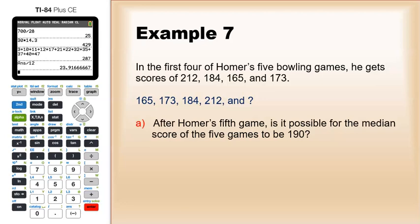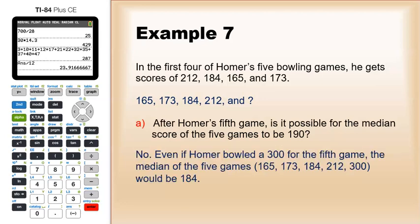After Homer's fifth game, is it possible for the median score to be 190? Well, we're going to do the same thing as the last example. Let's just say that his last game was the best possible - let's say 300. In that case, even if he bowled 300 in the fifth game, the median would be - 165, 173, 184 - looks like the median would be 184. So no, it's not possible to get 190. The best his median could be is 184.